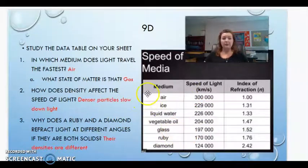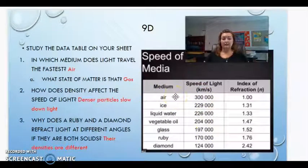So in which medium does light travel the very fastest? Well, we're just looking at the highest number and the highest number is air. So the medium is air. And what's the matter of that is it's a gas. Air is a gas.